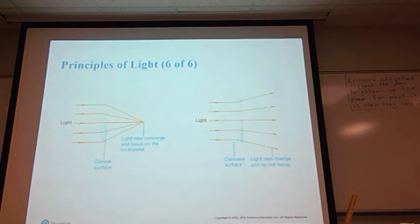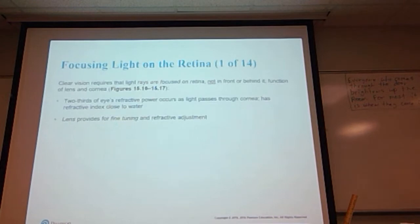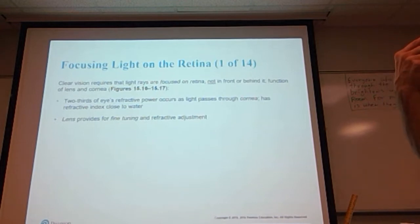Here is a bulging convex lens — you can see that the light passes through and it all converges to a single point. And here is a curved concave lens showing the light spreading out slightly. Clear vision requires that light rays be focused on the retina, not in front or behind it. That is the function of the lens and the cornea — two-thirds of the eye's refractive power occurs as light passes through the cornea, which has a refractive index similar to water. The lens then provides the fine tuning or refractive adjustment that is required.